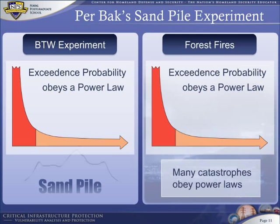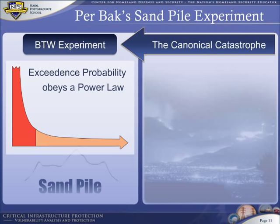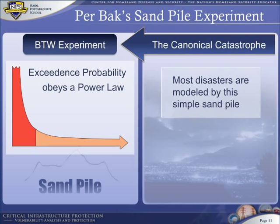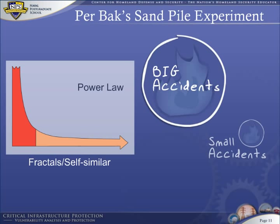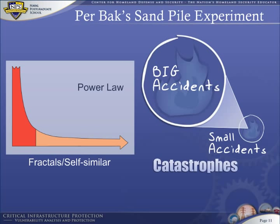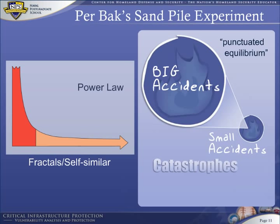The BTW experiment, or sand pile experiment, has become the canonical catastrophe — most other disasters are modeled by this simple sand pile. Recall that power laws are fractals: they are self-similar, suggesting that big accidents are simply large replicas of small accidents. Per Bak called this punctuated equilibrium, and Perrow called these normal accidents. Catastrophes are both punctuated and accidental, but randomness and self-organized criticality play a big role in cause and effect.